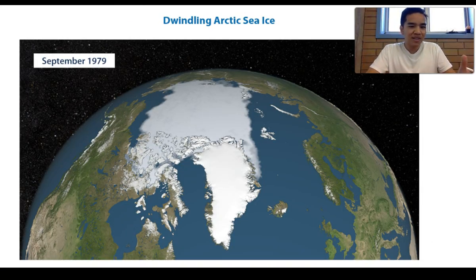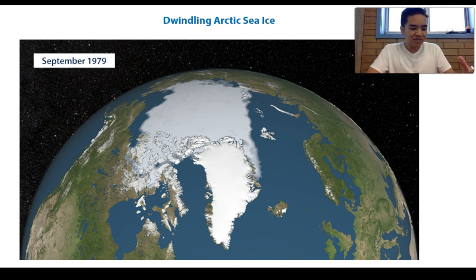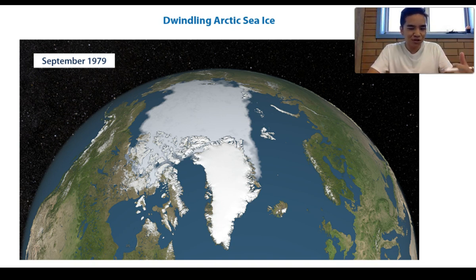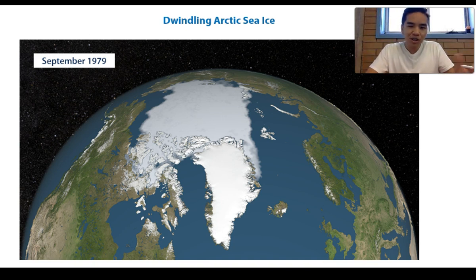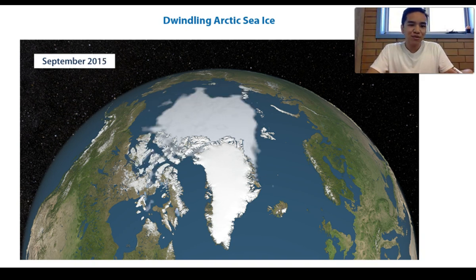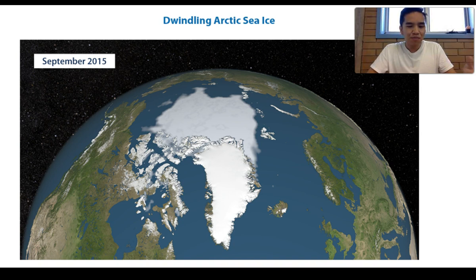As further evidence, we can look at some satellite imagery from September 1979, looking at the Arctic region. We know that sea ice and land ice are on a rapid decline — we're seeing reduced levels of polar ice in the Arctic. Arctic sea ice has been declining at a rate of approximately 13% per decade. Comparing September 1979 to September 2015, there has been quite a drastic difference, with a significant decline in the amount of polar ice.